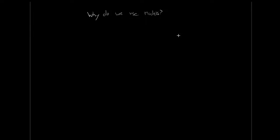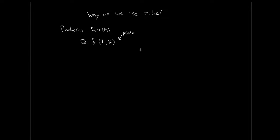Our first model utilizes the production function. If you saw this production function in micro, you probably saw it something along the lines of: Q, as in some quantity or output, was just some function, given technology, of our labor and our capital. That's often how you saw this production function in micro. Really all it's saying is our output — the stuff we're producing — is some function of labor and capital, or some technology that we have. One functional form would be our Cobb-Douglas, which says output is A times L to the alpha, times capital to the beta.